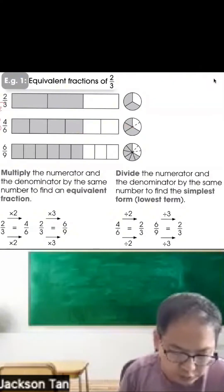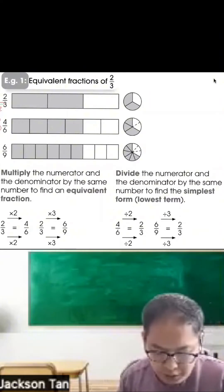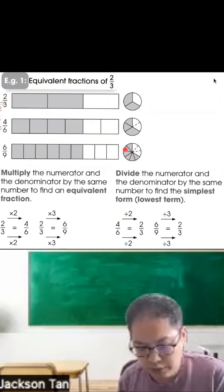So if you times 3, it's also the same as well. 2 times 3 is 6, 3 times 3 is 9, so the whole thing cut into 9 parts, 6 out of 9. 6 out of 9, it's the same.